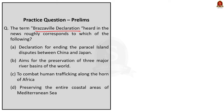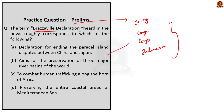Now look at this question: The term 'Brazzaville Declaration' in the news roughly corresponds to which of the following? Option A says declaration for ending the Parasol Island disputes between China and Japan; option B aims for the preservation of three major river basins of the world; option C is to combat human trafficking; and option D is preserving the entire coastal area of the Mediterranean Sea.